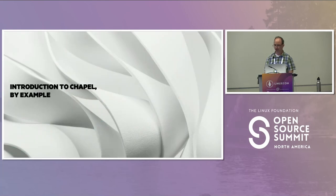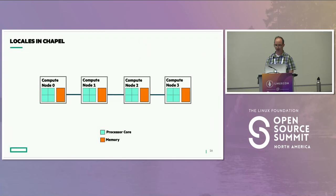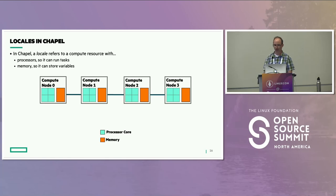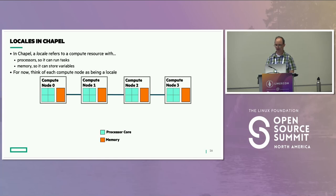Now I'm going to start teaching you a bit about Chapel itself using examples. Let me return to my diagram and define the term 'locale.' In Chapel, a locale refers to a compute resource that has processors — so it's able to run tasks — and has memory, so it can store variables. I've been calling them compute nodes; we call these locales. For now, it's safe to think of each compute node as being a locale, though that's a slight simplification we'll address later.